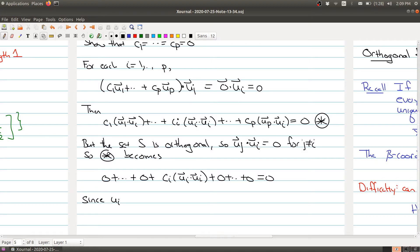Now, since ui does not equal to zero, the vector ui doesn't equal to zero, the dot product of ui with itself doesn't equal to zero. So what we have is this term here is equal to zero. This number right here is not zero, so this forces ci to be zero.